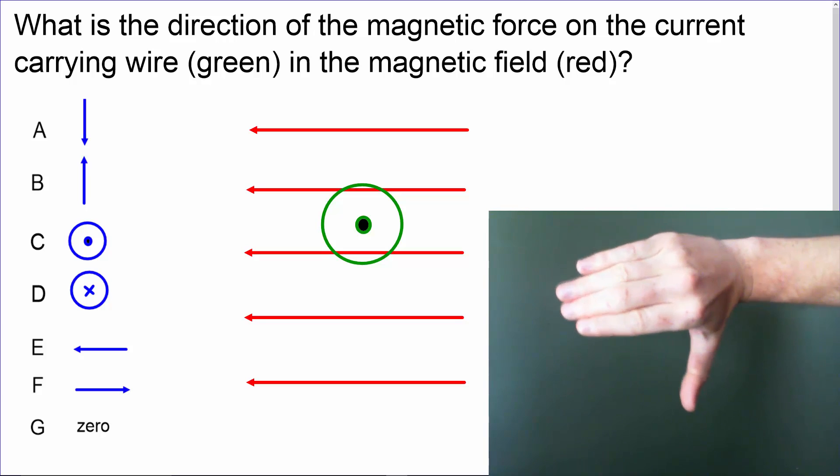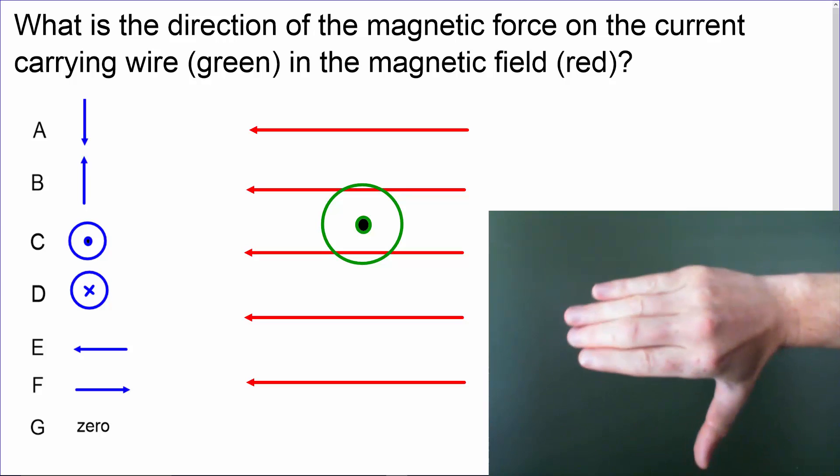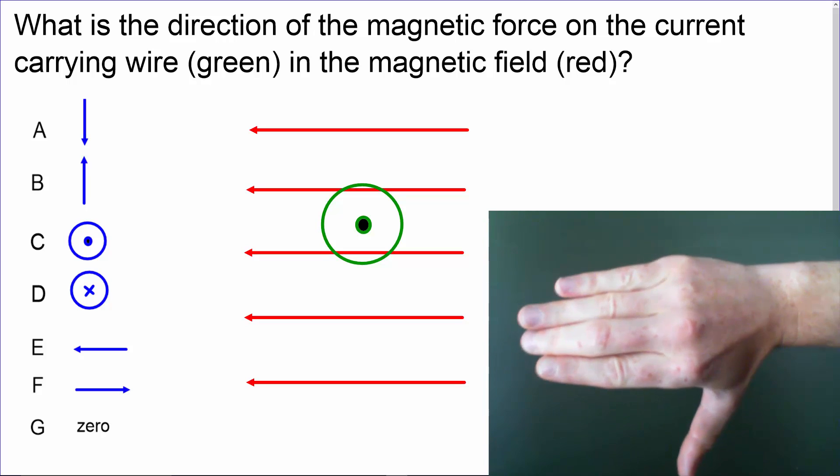Now, I need to make sure my thumb is pointing perpendicular to those fingers, and that will show me that the direction of the magnetic force will be down, which is letter A.